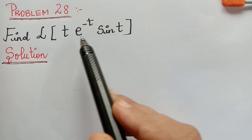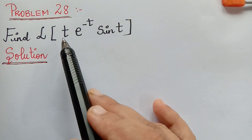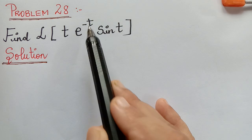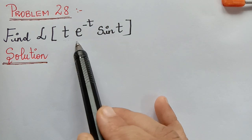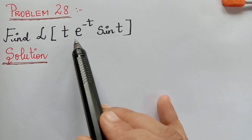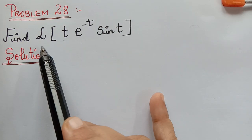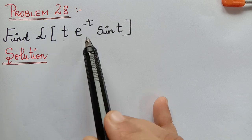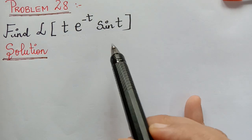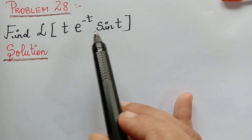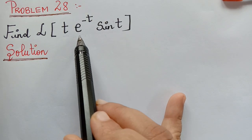We observe that we have a product of three functions: t, e^(−t), and sin(t). Because we have t and e^(−t), we are going to apply two theorems to find the solution. The first theorem we will apply is the first shifting theorem, and then we will apply theorem 2 to find the solution.